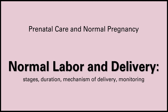The next topic is normal labor and delivery. There are three main stages of labor. Stage 1 is the onset of labor until full dilation of the cervix to 10 centimeters. Stage 2 is from full dilation until the delivery of the baby. And stage 3 is postpartum until delivery of the placenta. Stage 1 is defined as regular painful contractions that result in progressive cervical effacement and dilation. In practice, it's not always easy for a pregnant patient to know whether contractions are true labor or false labor, also called Braxton-Hicks contractions.